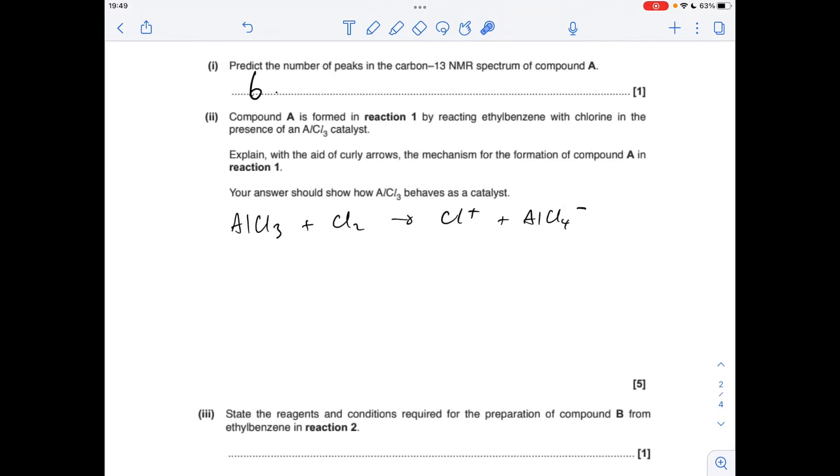Moving on to the mechanism now, so we're going to take the aluminum chloride catalyst and react it with chlorine. That's going to generate the electrophile and it's going to generate this AlCl4 minus ion. Next part of the mechanism: the electrophile accepts a pair of electrons from the delocalized ring of pi electrons, so we have a curly arrow from the circle in the benzene ring to the Cl plus. That's going to generate this unstable intermediate.